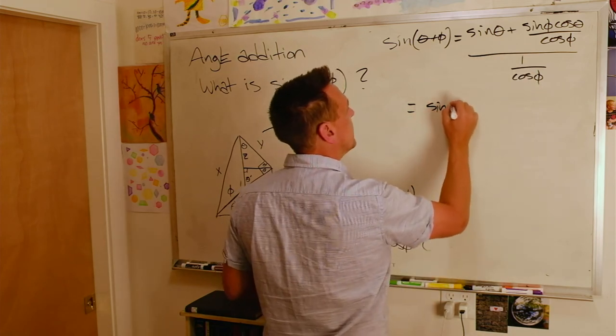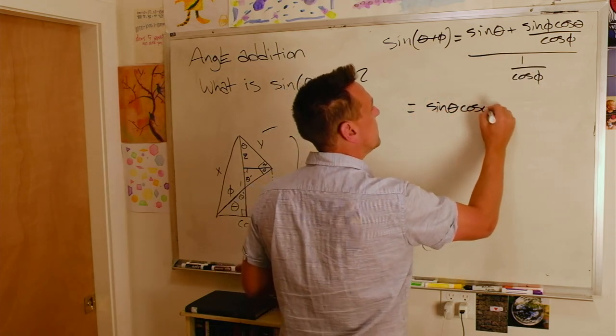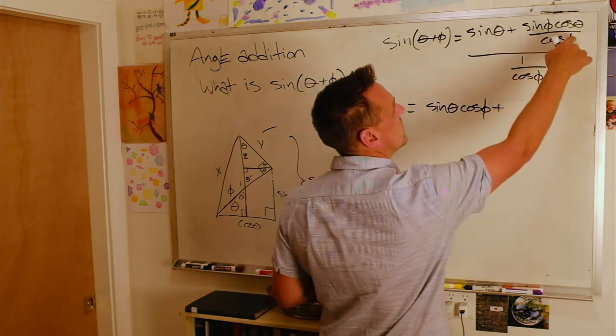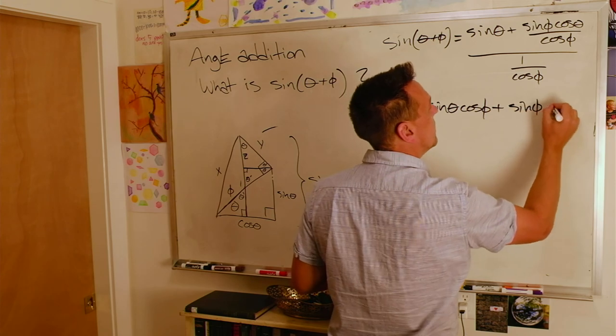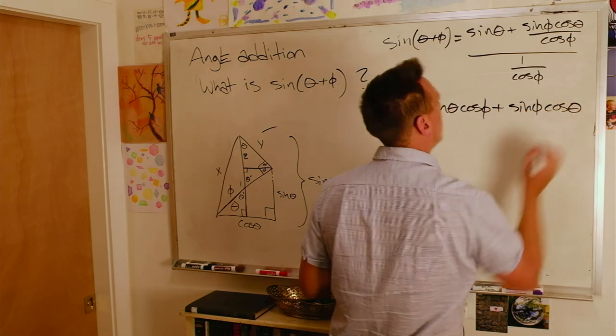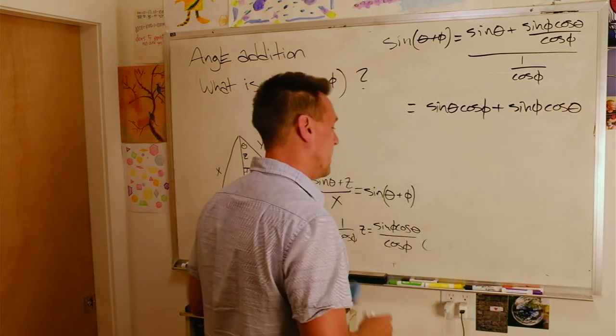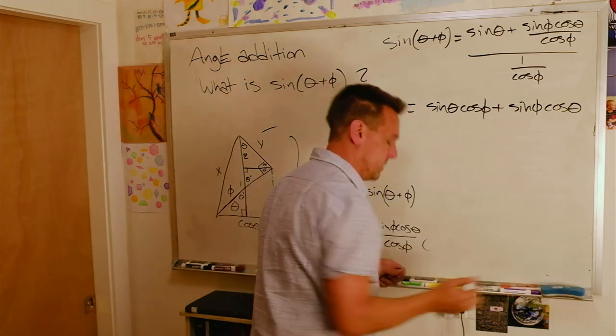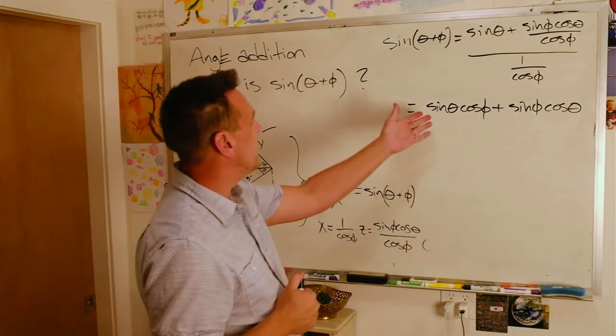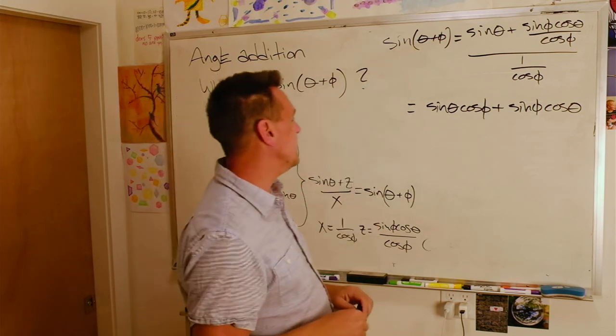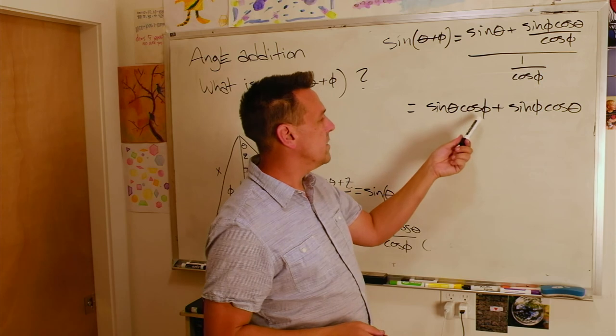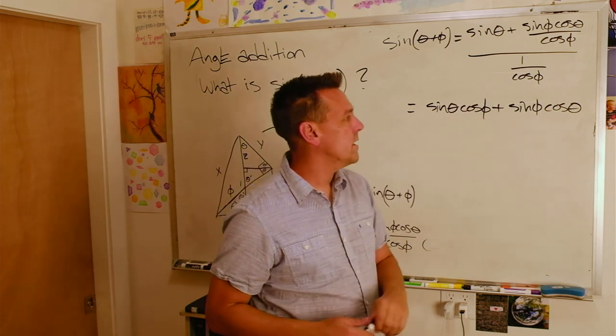Here I get sine theta cos phi. And then here the cosine phi cancels, and I get sine phi cosine theta. And it's been a while since I was asked to remember these formulas in trig class, but I think that's the formula we're looking for. The sine of theta plus phi is equal to sine of theta cosine of phi plus sine of phi cosine of theta.